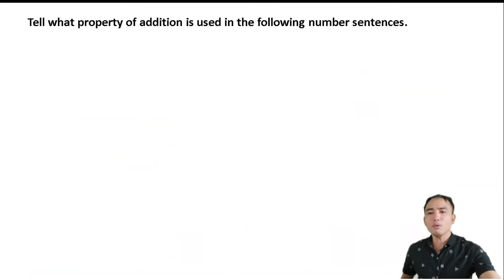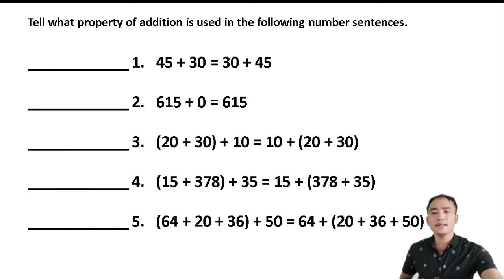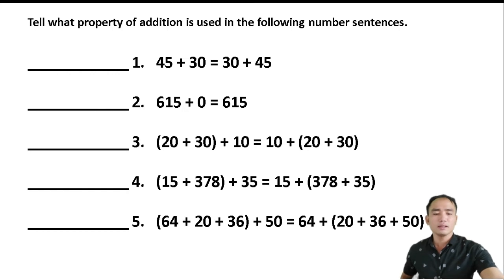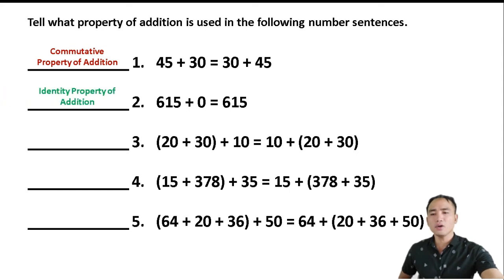Let us identify what property of addition is used in the following number sentences. Number 1: 45 plus 30 equals 30 plus 45 — this is the Commutative Property of Addition, because the order does not change the answer. Number 2: 615 plus 0 equals 615 — that is the Identity or Zero Property of Addition.